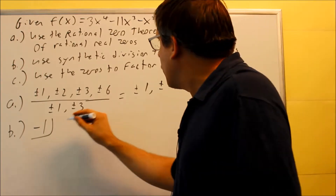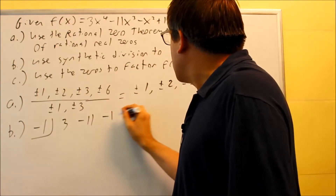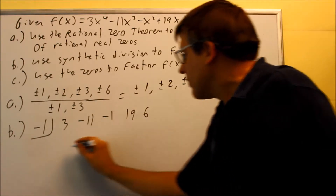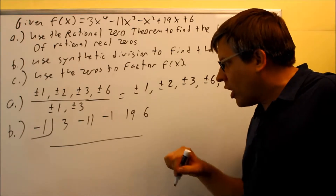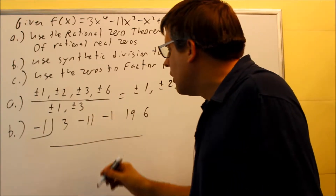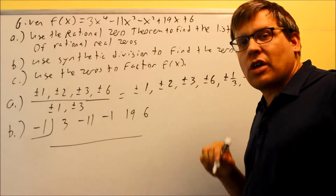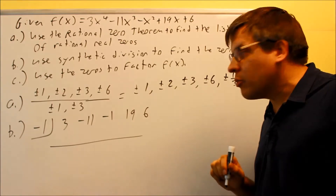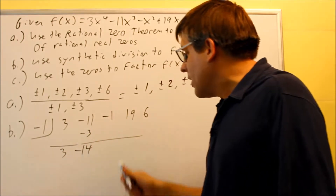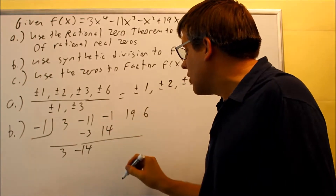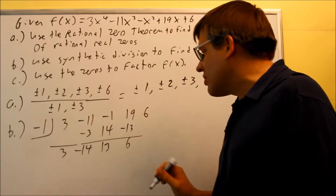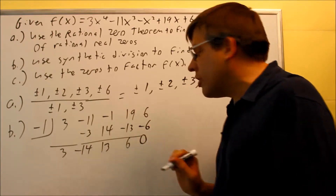So I'm going to use negative 1 here. I'll use the numbers from my original polynomial written in descending powers — the correct form — and put that into synthetic division. I have to do synthetic twice to bring it down to a square power, since each time it drops the power by 1. Dropping down 3, then 3 times negative 1 is negative 3; adding gives negative 14. Multiplying gives positive 14; adding gives 13. Then 13 times negative 1 is negative 13; adding gives 6. Then 6 times negative 1 is negative 6, and we do get 0 for the remainder.